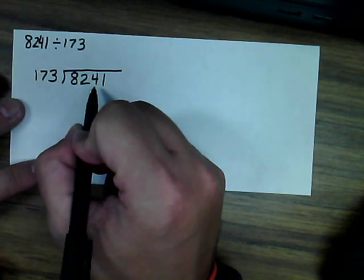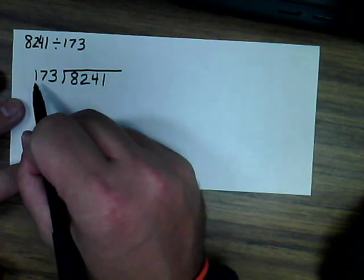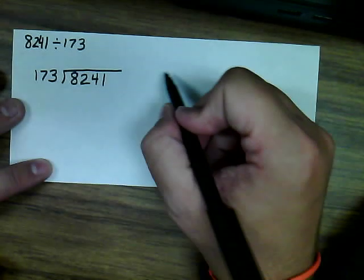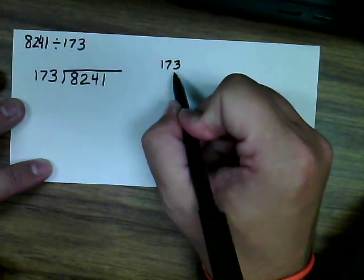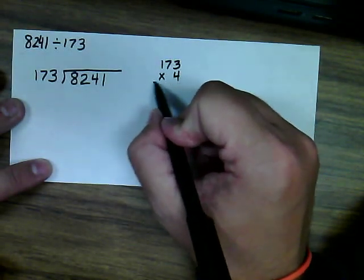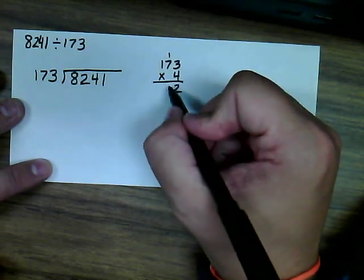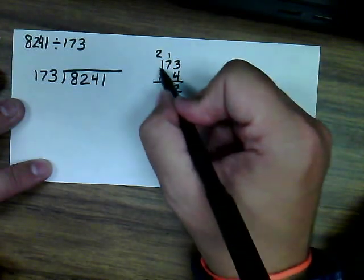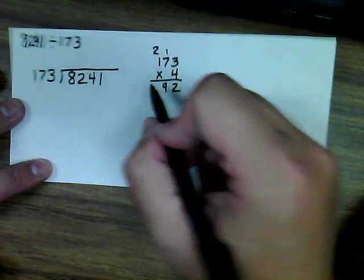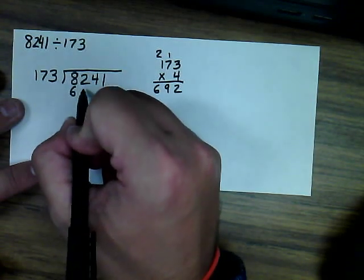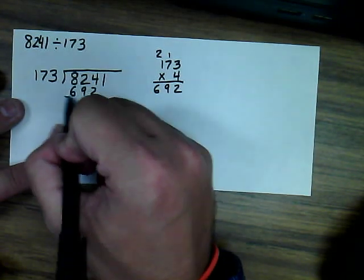173 going into 824 is not an easy decision to make. So we want to, again, round. I think that 200 goes into 800 four times, so I'm going to try 173 times 4. 4 times 3 is 12. 4 times 7 is 28, plus 1 is 29. 1 times 4 is 4, plus 2 is 6. 692, I think, is a good place to begin.